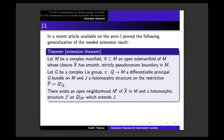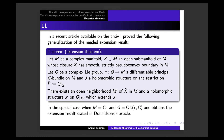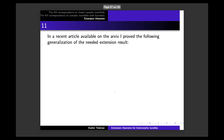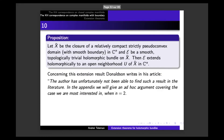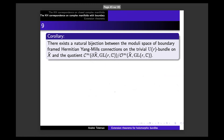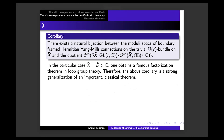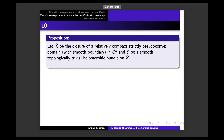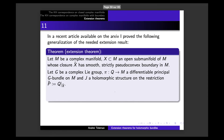In the special case when M is Cⁿ and G is GL(r,C), one obtains the extension result needed in Donaldson's article. In particular, the stated corollary is proved in full generality. Combining a special case of this extension theorem with Donaldson's arguments, we get a complete proof of this beautiful isomorphism theorem.